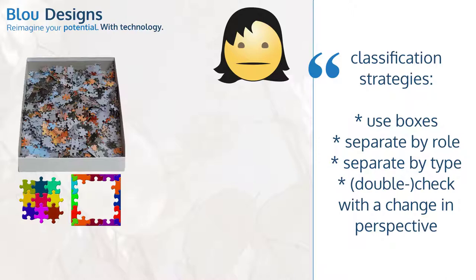And then we classify pieces according to parts of the puzzle, like making a separate pile of the sky pieces that we come across. That is, we separate by type of thing.